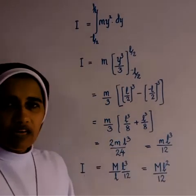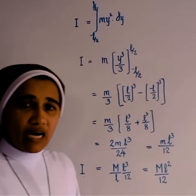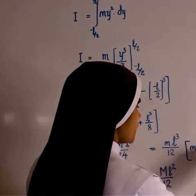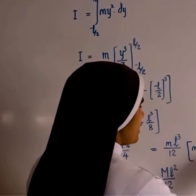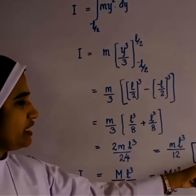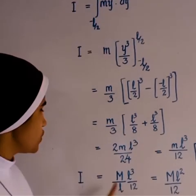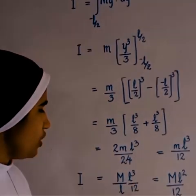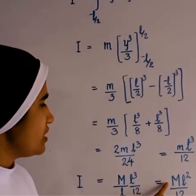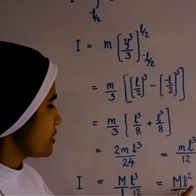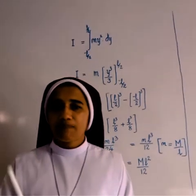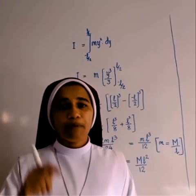Here, small m is mass per unit length, equal to capital M/L. Re-substituting: I = (M/L)·(L³/12) = ML²/12. So the moment of inertia of a thin rod about an axis passing through its center and perpendicular to its length is ML²/12.